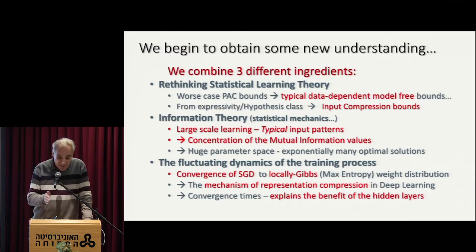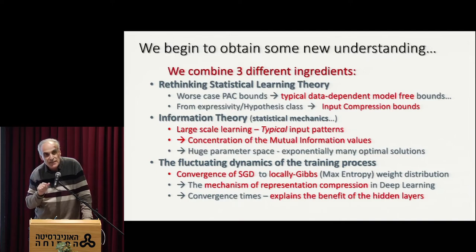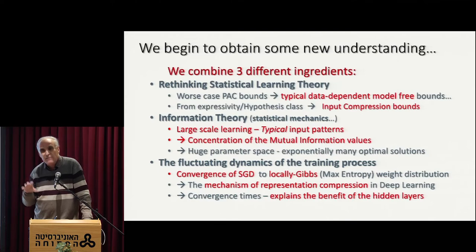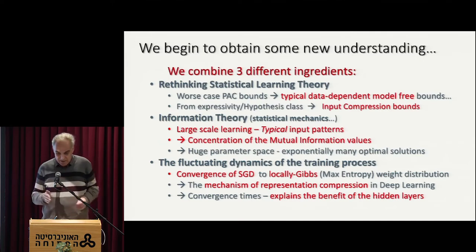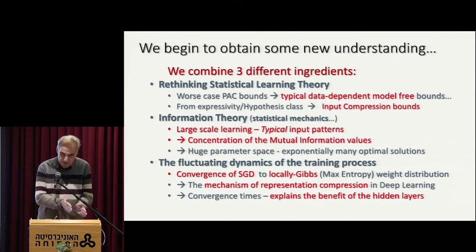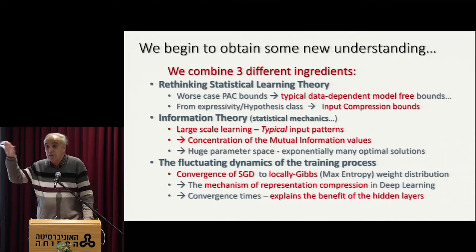On the other hand, if you forget about hypothesis classes almost altogether — forget about the type of functions you're trying to learn, because this is way too rich — and think about the dynamics of the training, what actually happens there that somehow self-regulates the learning and actually self-regulates the class, you can actually improve the bounds dramatically by moving from the hypothesis class concept to what I call data-dependent or data compression bounds.